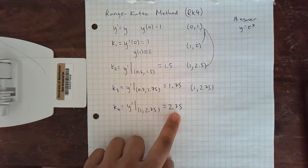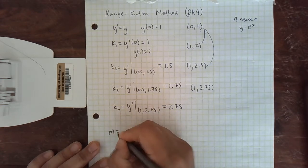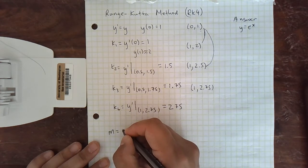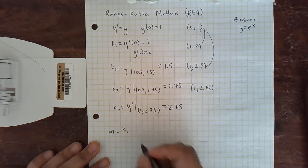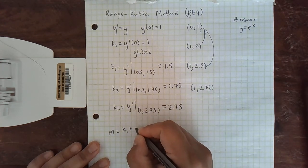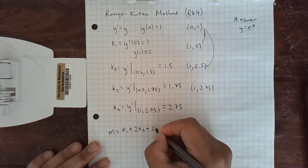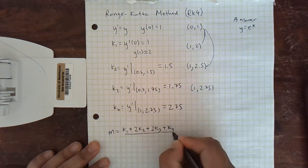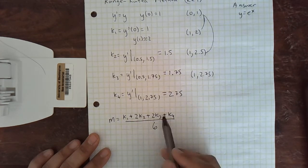And then our slope, m, here's the formula for if we're doing RK4. There's other Runge-Kutta methods that use different numbers of slopes. This one's fairly accurate. So we take two of each of the middle slopes, and one of the beginning and end one. And we're going to divide by six. There's six of them because there's two of each of the middle ones.